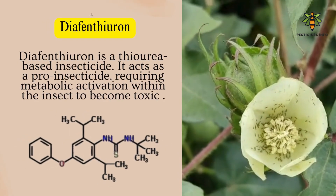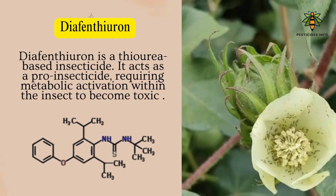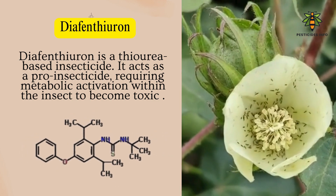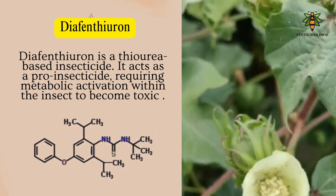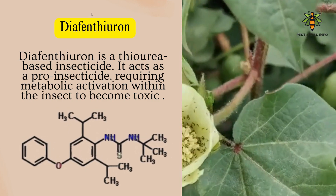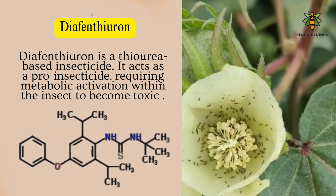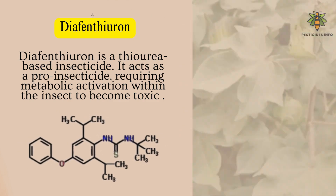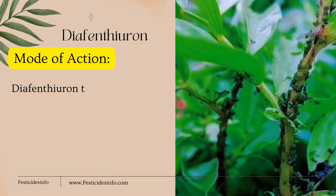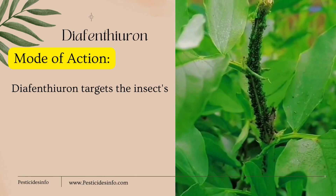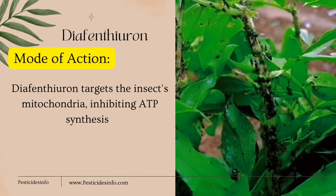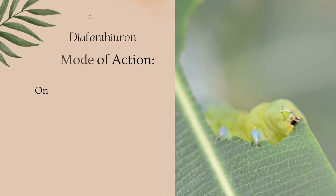Diaphenthyron is a thiourea-based insecticide. It acts as a pro-insecticide, requiring metabolic activation within the insect to become toxic. Its mode of action targets the insect's mitochondria, inhibiting ATP synthesis.